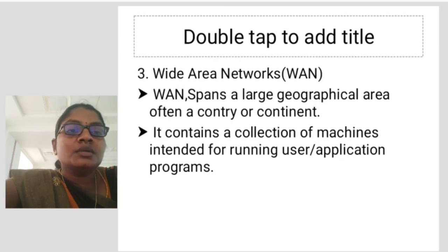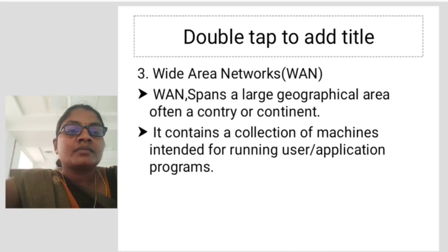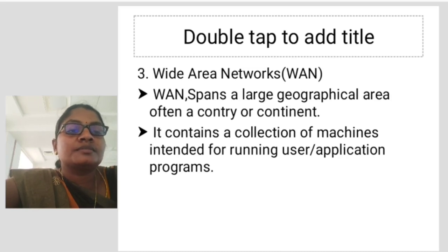The third one is Wide Area Networks, WAN. A WAN spans a large geographical area of a country or continent. It contains a collection of machines intended for running user or application programs.